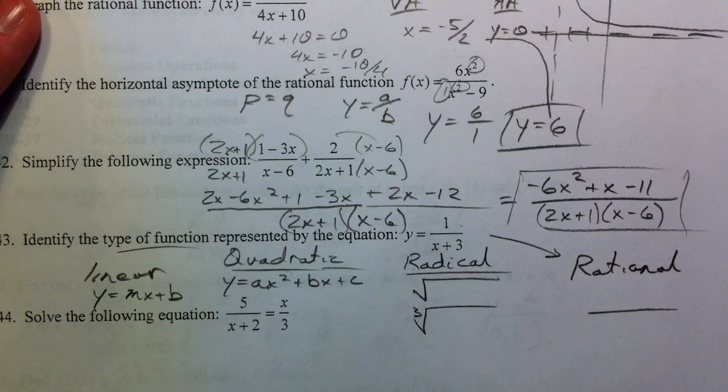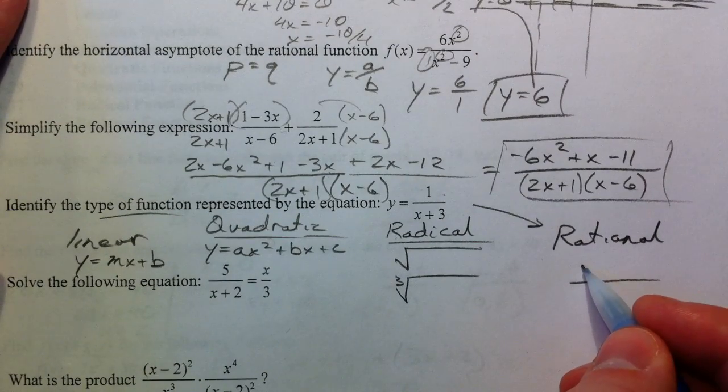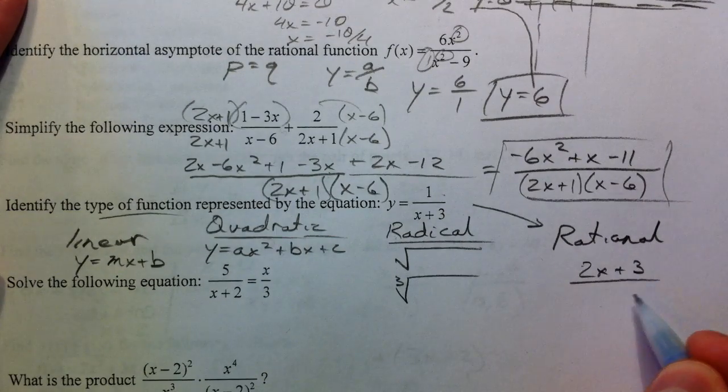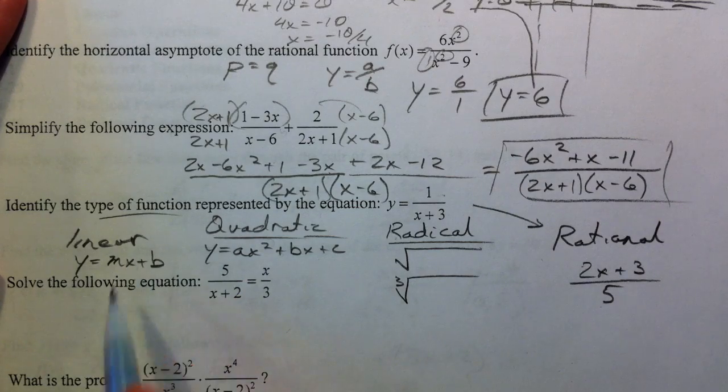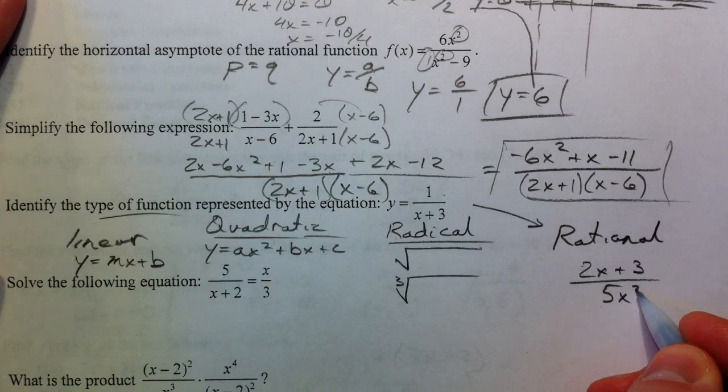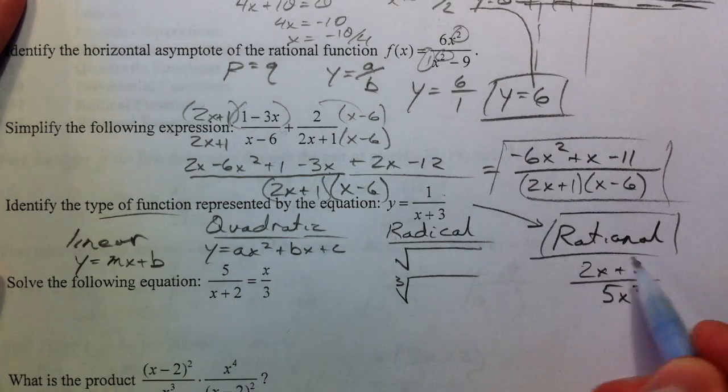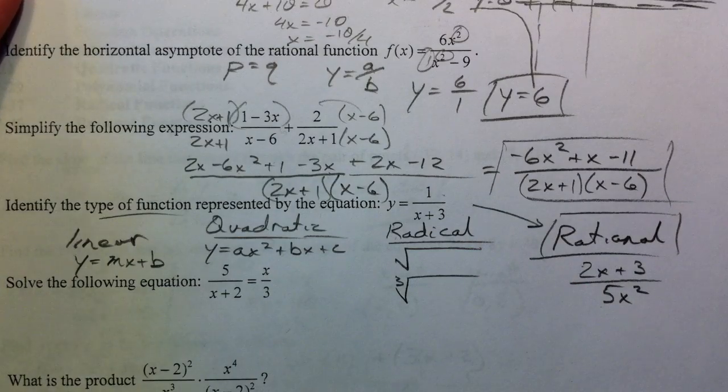And these are called rational functions, where you have a fraction in them, as long as you have an X of sorts on the bottom. Because if you just had 2X plus 3 over 5, it would be a linear function. But as soon as you put maybe a 5X squared in there, it's a rational function. So the answer to this one is rational because you've got 1 over X plus 3.